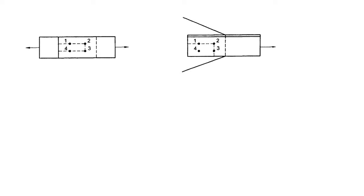Whenever you are connecting two steel members using bolts — this can be simply two plates which have been connected with a tensile load being applied, or it can be some angle section which is being connected with a gusset plate. Again, this angle section is being connected with the gusset plate using bolts, and here is the tensile load.